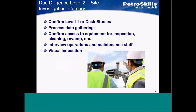Due diligence level two — site investigation. Now we've done all the due diligence at the office and we're going out to the job site. Everything we found working in our office, we want to confirm. So: cursory process data gathering, confirm access to equipment.